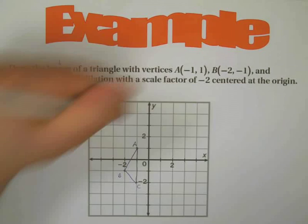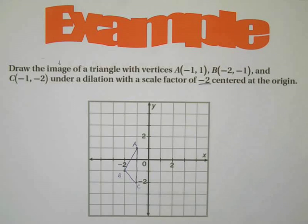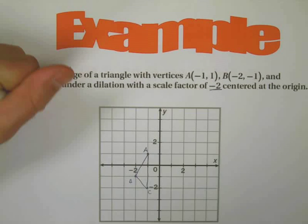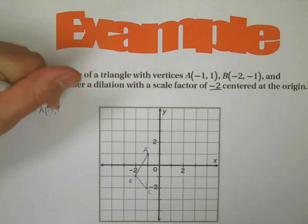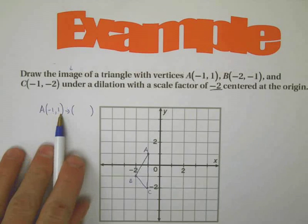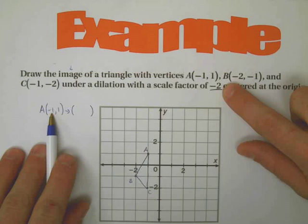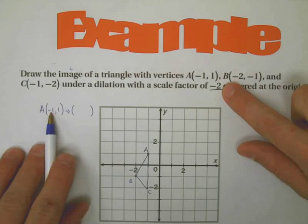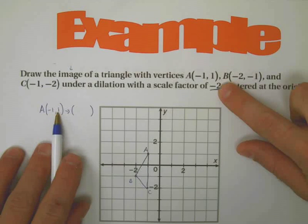We want to draw the dilated image and the scale factor here is negative two. Well that means that the new A is going to be at this location. If A was at negative one, positive one, then I take each of these values and multiply it by negative two.